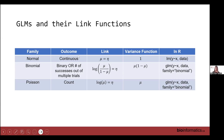For Poisson, which is for count outcomes, we have the log link: log of mu equals our linear predictor. Poisson has the strict assumption that the mean equals the variance. In R, the family would be equal to Poisson.